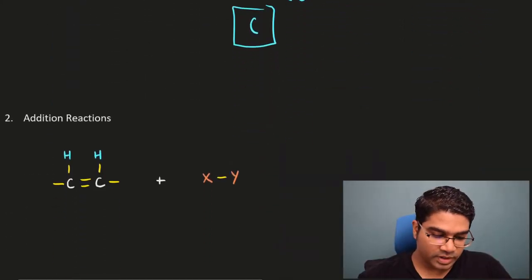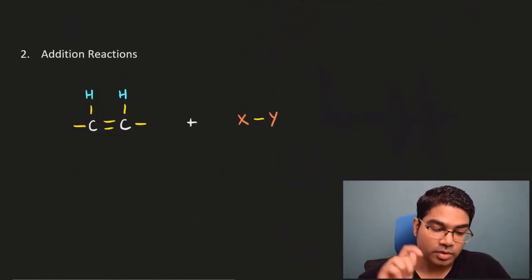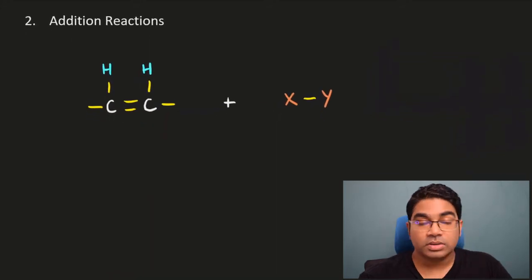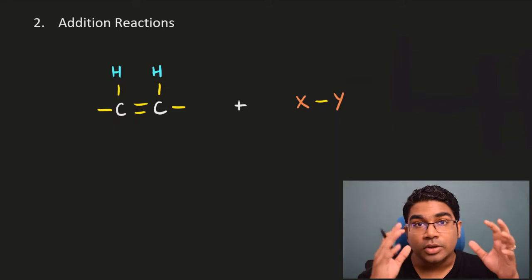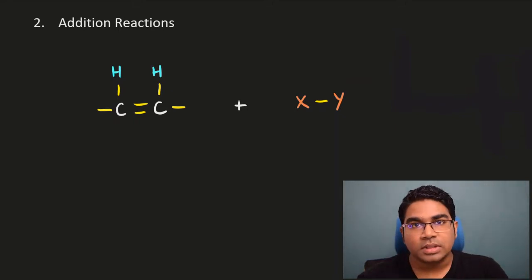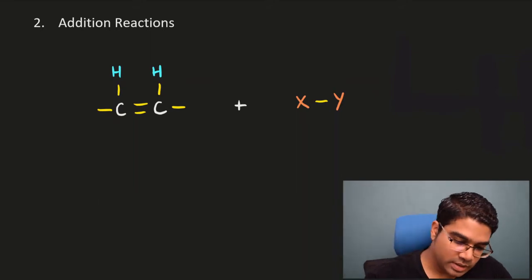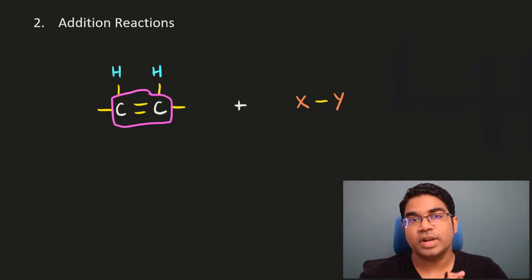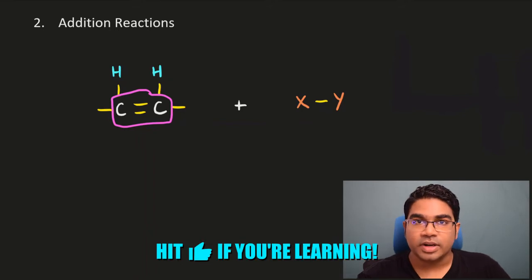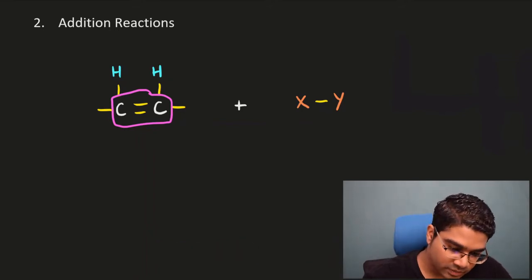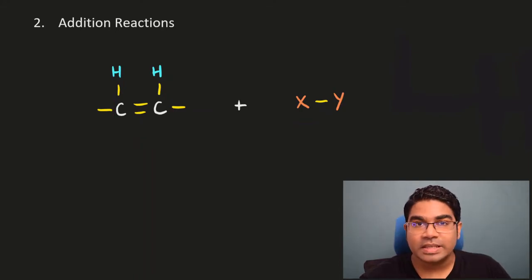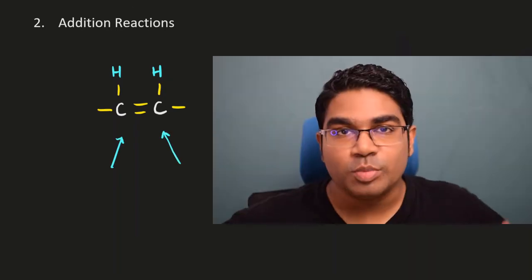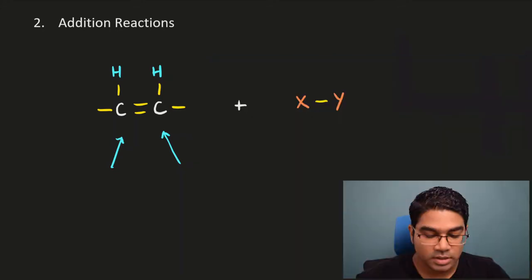Now let's go on to the second reaction. The second reaction is actually a group of reactions — there is a group of five reactions here, and they are called the addition reactions. Alkenes are special because they are unsaturated. Unsaturated hydrocarbon means not all the carbon-carbon bonds are single bonds; there can be double bonds or even triple bonds. Here we have a carbon-carbon double bond, so this is an unsaturated compound. Because alkenes are unsaturated, they can undergo addition reactions. You can imagine the molecule as having space for other atoms to come in because of the carbon-carbon double bond.